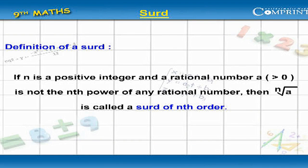Definition of a surd: If n is a positive integer and a rational number a greater than 0 is not the nth power of any rational number, then nth root a is called a surd of nth order.